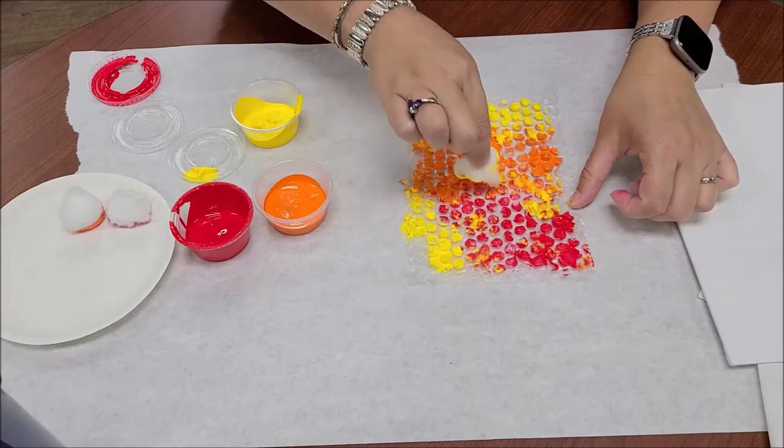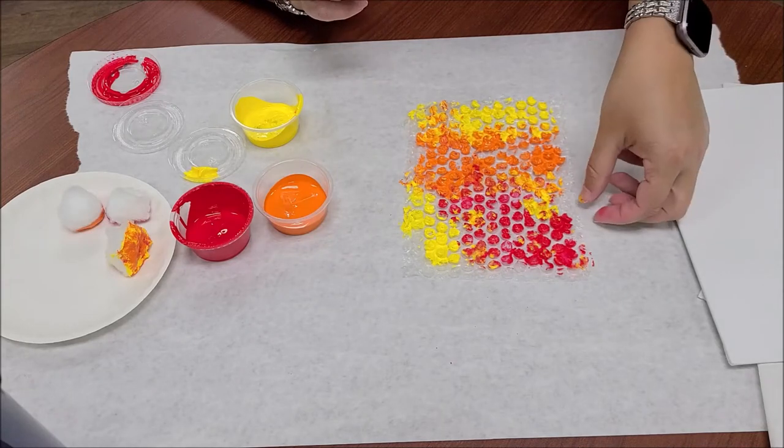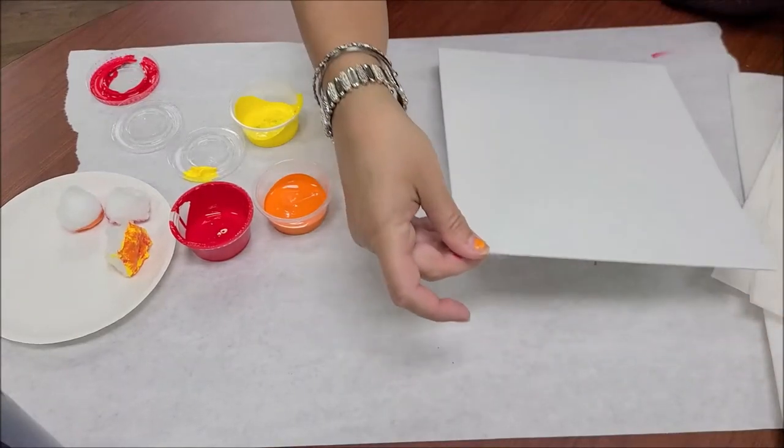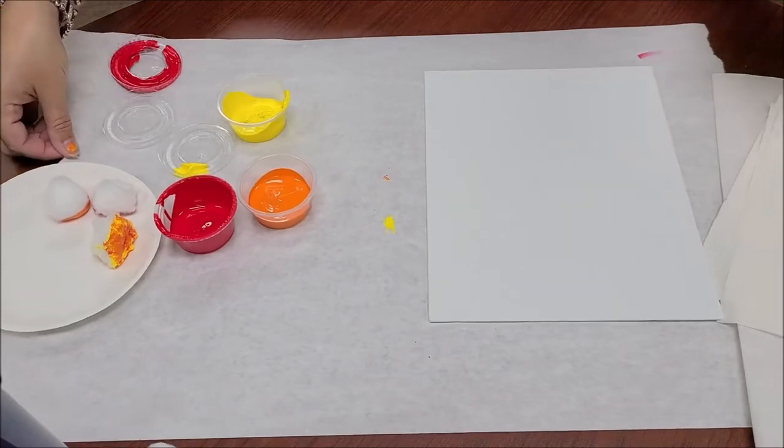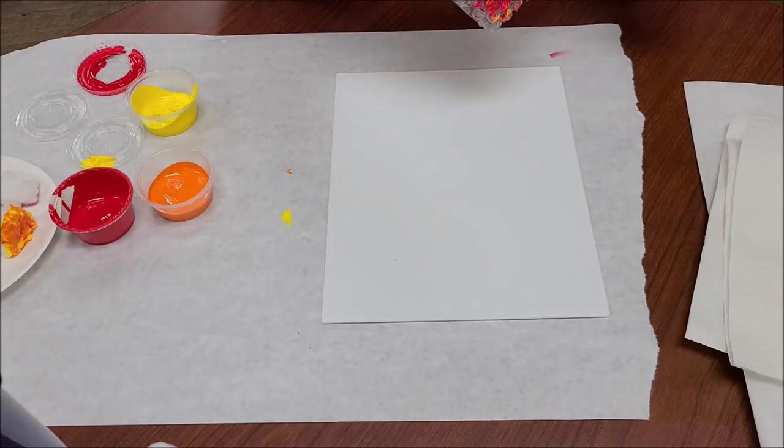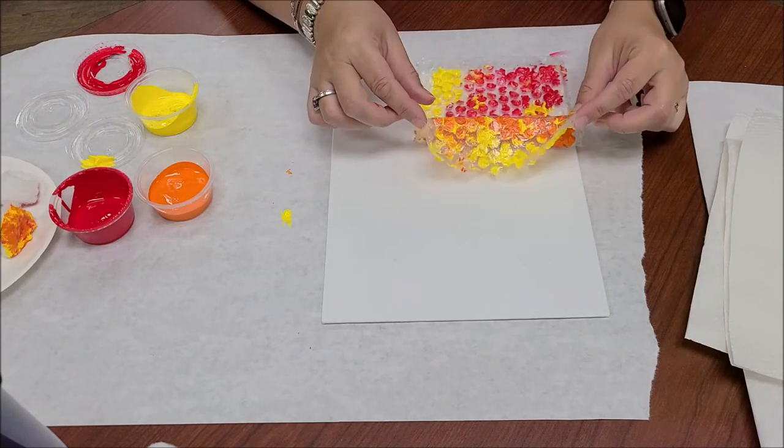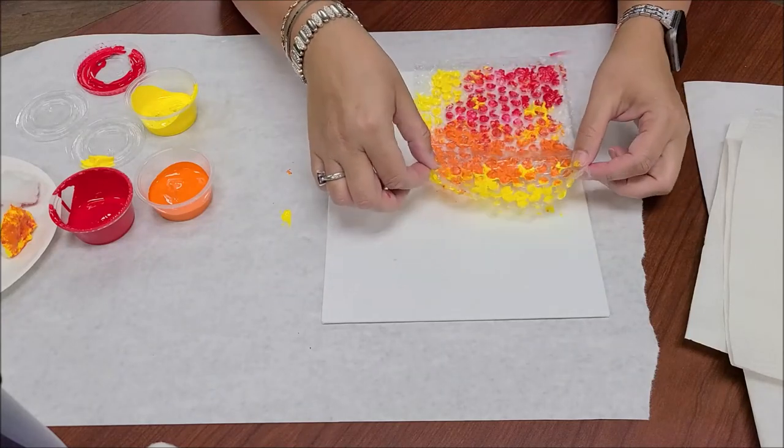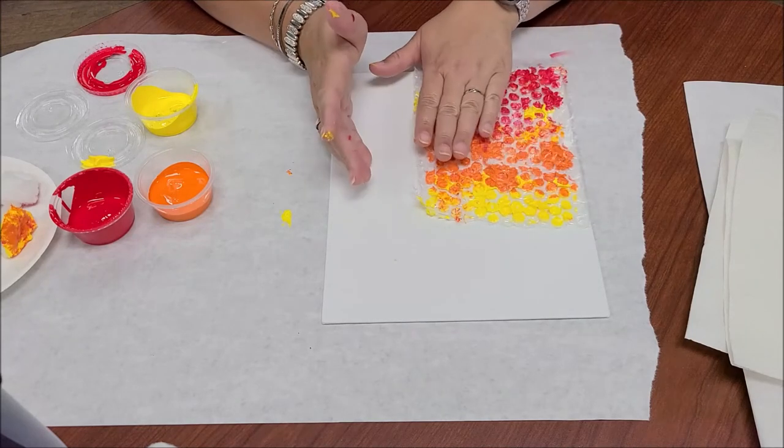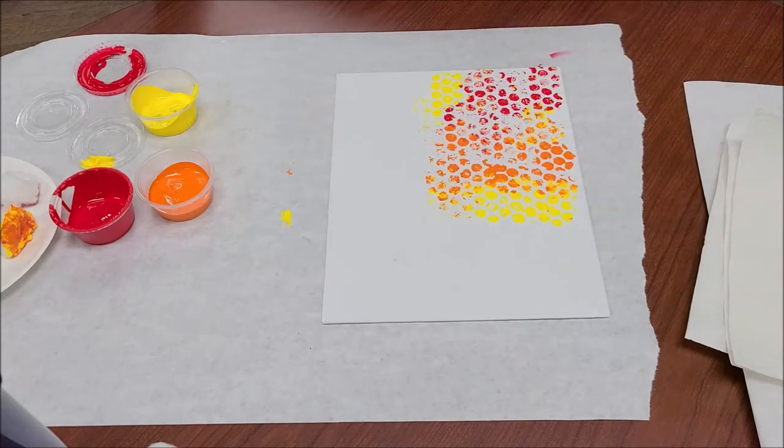Whatever pattern you want to do. You work fairly quickly when you're doing this because you don't want the early paint to dry before you finish with the last bit. So we've got our canvas. I'm going to slide that over a little. We've got our bubble wrap. You're just going to take it and very carefully lay it down somewhere on your canvas, wherever you want to start. Don't slide it, because that'll just leave you a smear, and then just gently pat down, and then peel up, and you've got yourself a design.